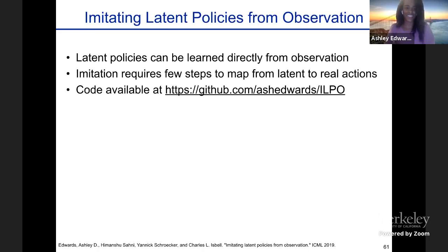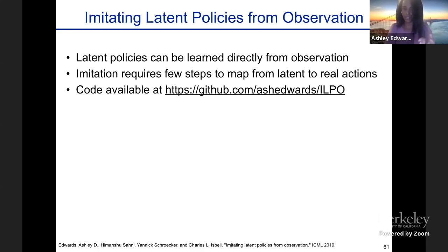In conclusion for this work: latent policies can be learned directly from observation. If we want to train an agent to imitate, it just requires a few steps to map our latent actions to the real actions you can take in the world. Our code is available online.